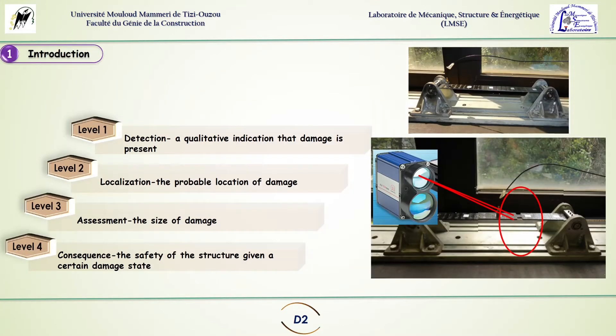There exist different levels for structural health monitoring. Initially we want to know whether there is a damage or not. In the second level we want to know the location of the damage.